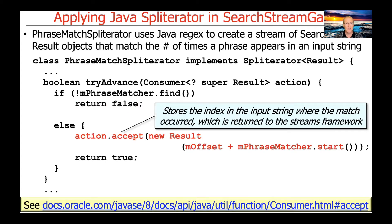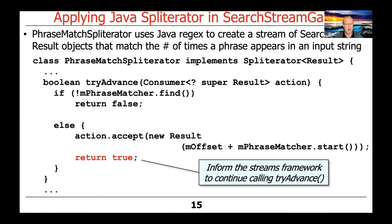Assuming we did get a match, we accept the match by creating a new result object which keeps track of where the match occurred using the phrase match pattern matcher and the start method, which returns the index where the match occurred. We add the offset which is used for parallel streams to keep track of where this appeared in the original input. We make a new result object and accept it into the action, passing that information back to the streams framework, which uses it to make that one of the elements put into the stream being constructed. Because we did find a match, we return true, informing the stream framework to continue calling tryAdvance.